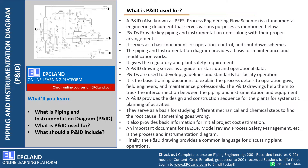Sometimes we call P&IDs 'PEFs' also — Process Engineering Flow Scheme. The main use of this document is to represent the piping and instrument items along with their proper arrangement — there will be a sequence with respect to flow, providing the association between piping and instrumentation. It also serves as a basic document for operation control and shutdown schemes — how the operational team will use this document to understand the sequence and how items are associated.